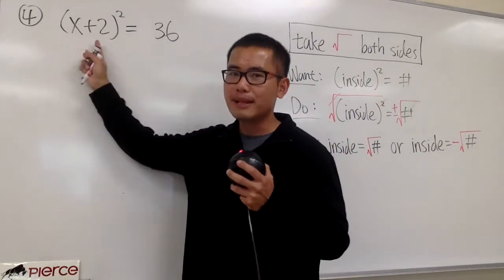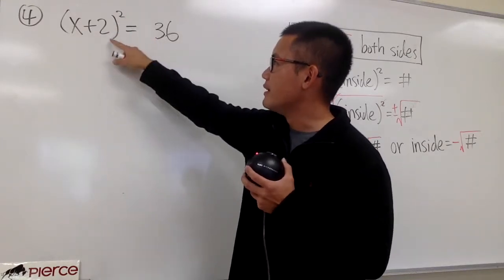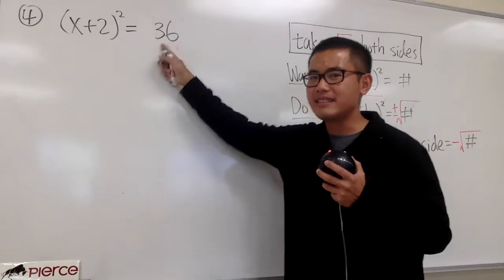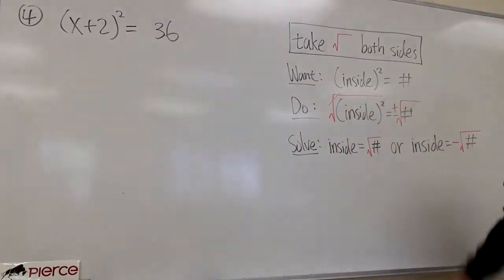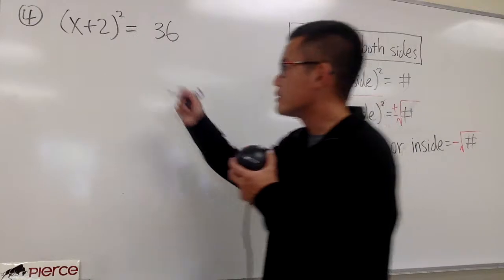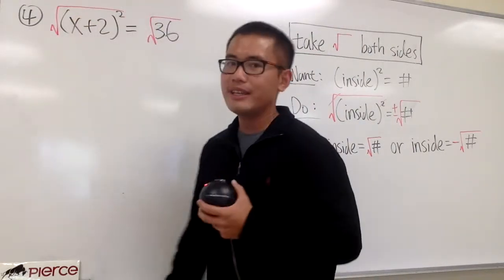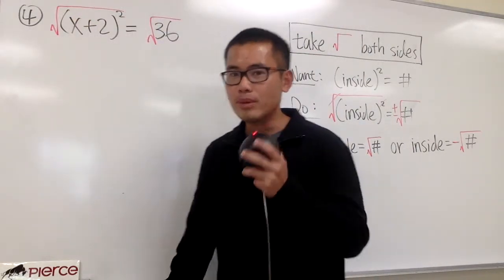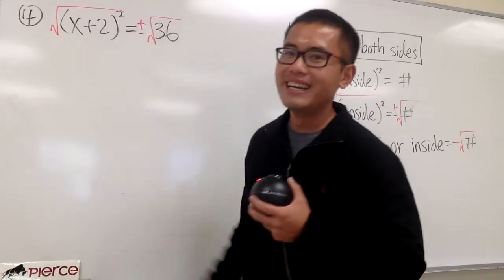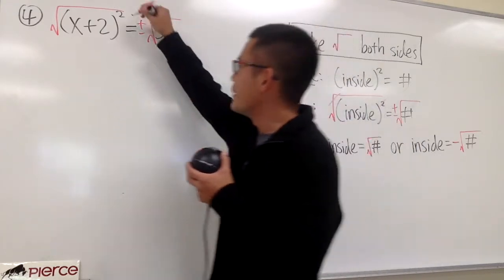We have parentheses with x plus 2 inside, and then raised to the second power, and this is equal to 36. That's exactly what we want to have first, isn't it? With that being said, we can just go ahead and take the square roots on both sides. And remember, be sure to put a plus-minus on the right-hand side.